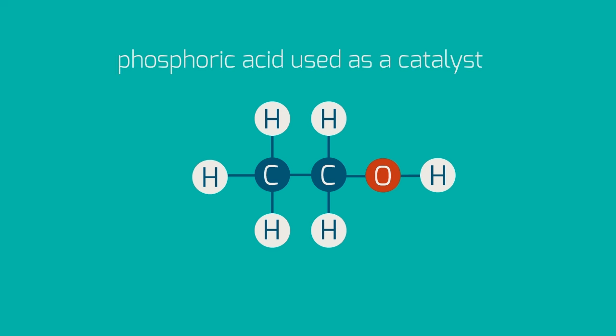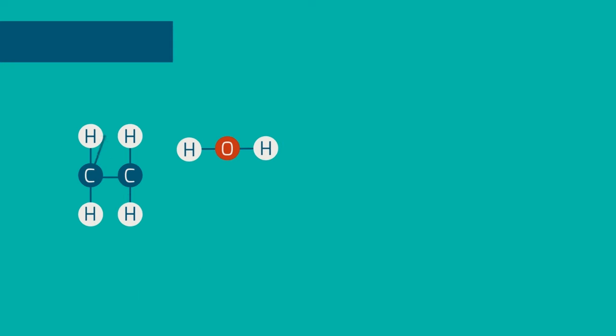Phosphoric acid is used as a catalyst. Note that ethanol is the only product in this reaction. The ethene route is faster and more efficient as there is no waste product formed, only the useful one.